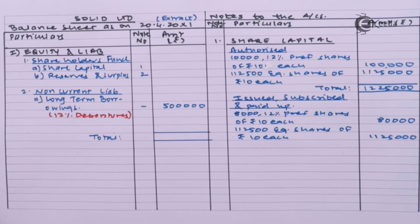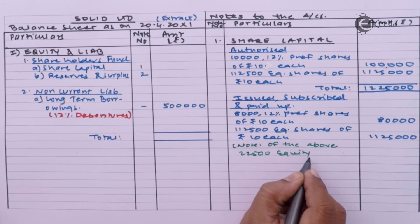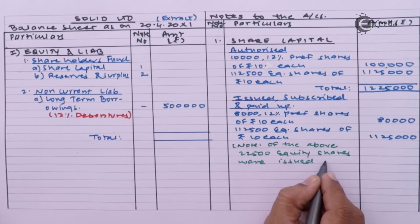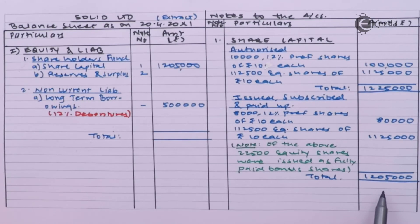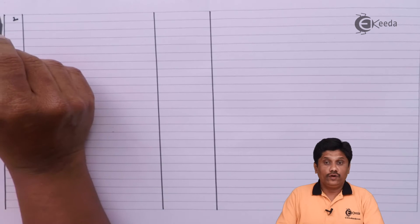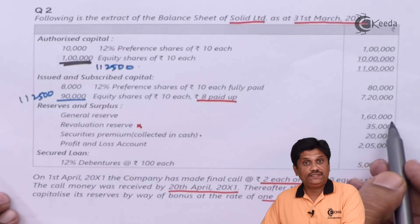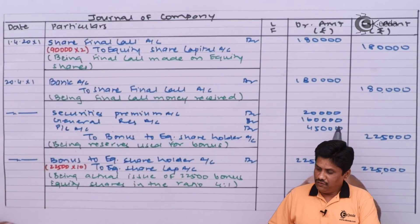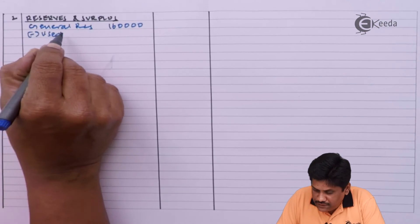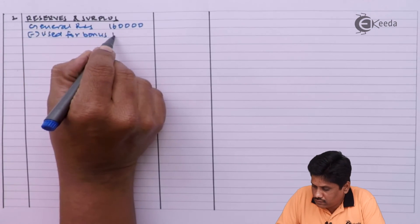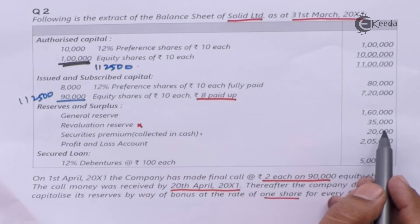Out of these shares, 22,500 have been issued for consideration other than cash — that is, issued as bonus shares — we will put that as a note. Total issued capital is ₹12,50,000. Next note is Reserves and Surplus — Note Number 2. We were having General Reserve of ₹1,60,000. Looking at the accounting entry, this ₹1,60,000 is fully used for bonus, so it becomes nil. Next: Revaluation Reserve — we have not changed it at all — ₹35,000.